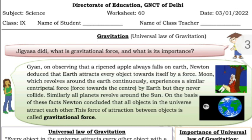What is gravitational force and what is its importance? On observing that a ripened apple always falls on earth, Newton deduced that earth attracts every object towards itself by a force. The moon, which revolves around the earth, continuously experiences a similar centripetal force towards the centre, but they never collide. Similarly, all planets revolve around the sun. On the basis of these facts, Newton concluded that all objects in the universe attract each other. This force of attraction between objects is called gravitational force.